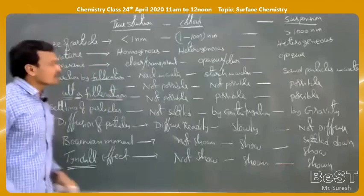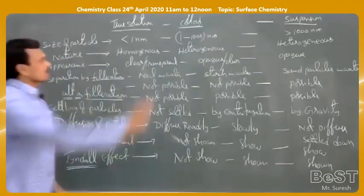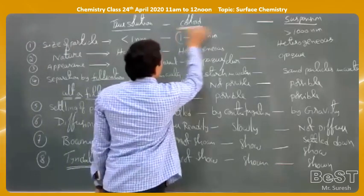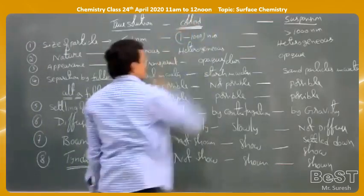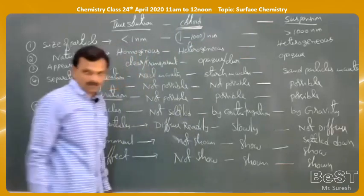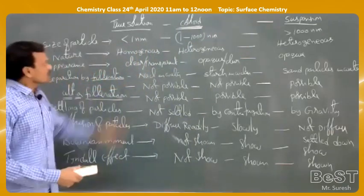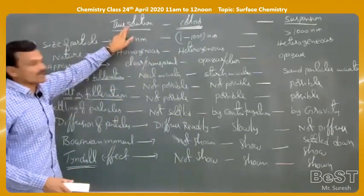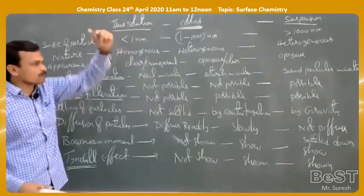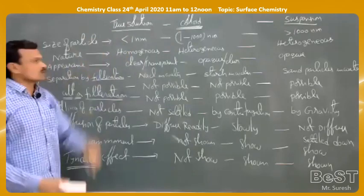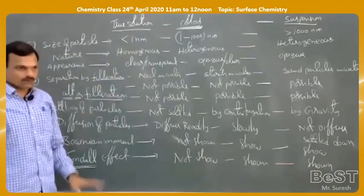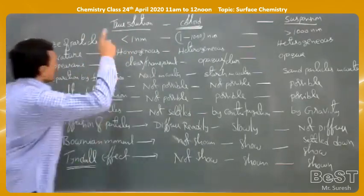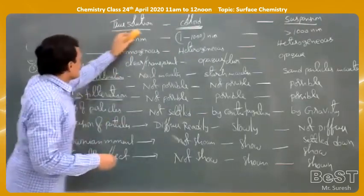The major difference between true solution, colloid, and suspension is the size of the solute particle. Less than 1 nm is a true solution; 1 to 1000 nm is a colloid; greater than 1000 nm is a suspension. Now, as per the syllabus, we will focus on colloidal solutions.